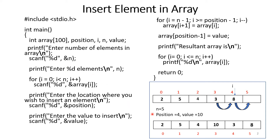Here n equals 5, so we create an array of size 5 from index 0 to 4. Now we insert elements into this array using a for loop: i equals 0, i less than n, i plus plus. So starting at i=0 we insert the first value at index 0, then i increments and we insert the next value at index 1, and so on. Next, we enter the location where we wish to insert an element — that is the position, which is 4. Then we enter the value to insert, which is 10.